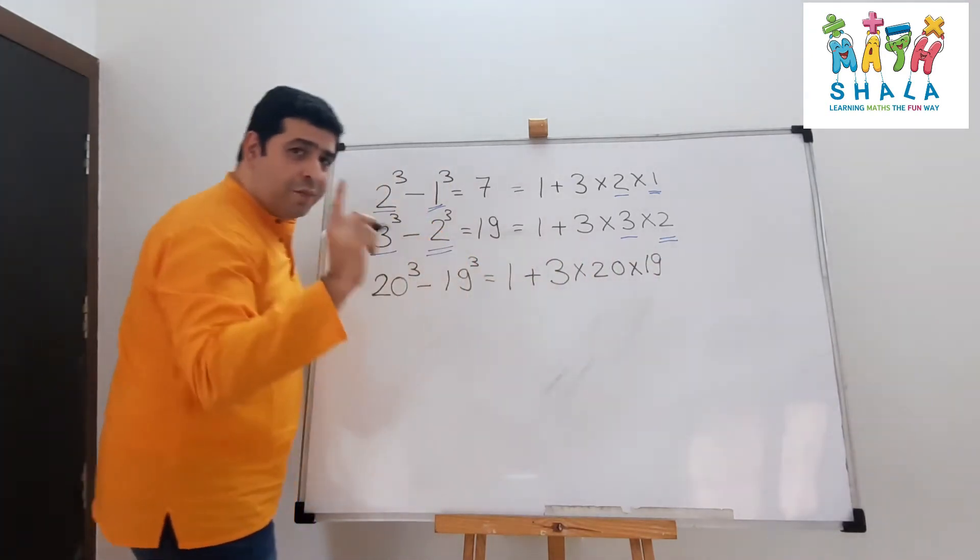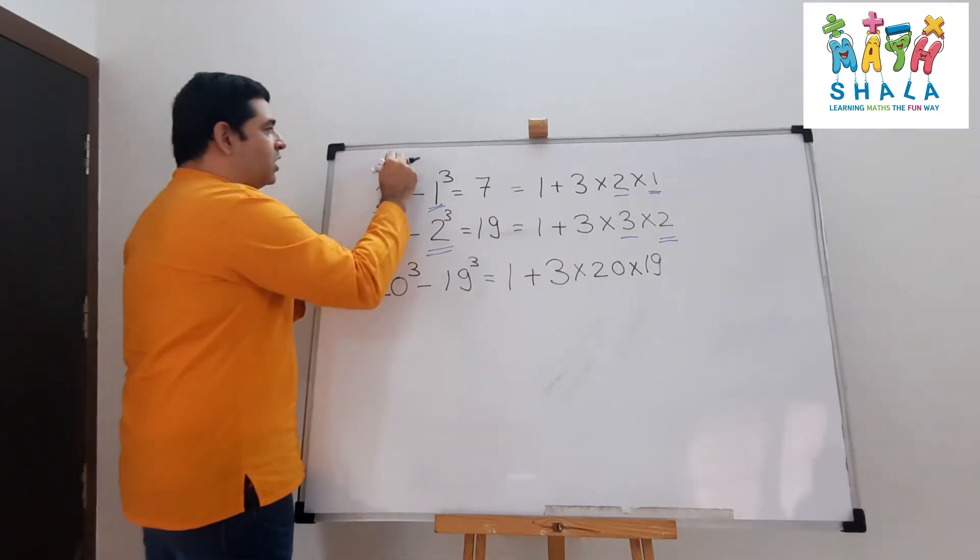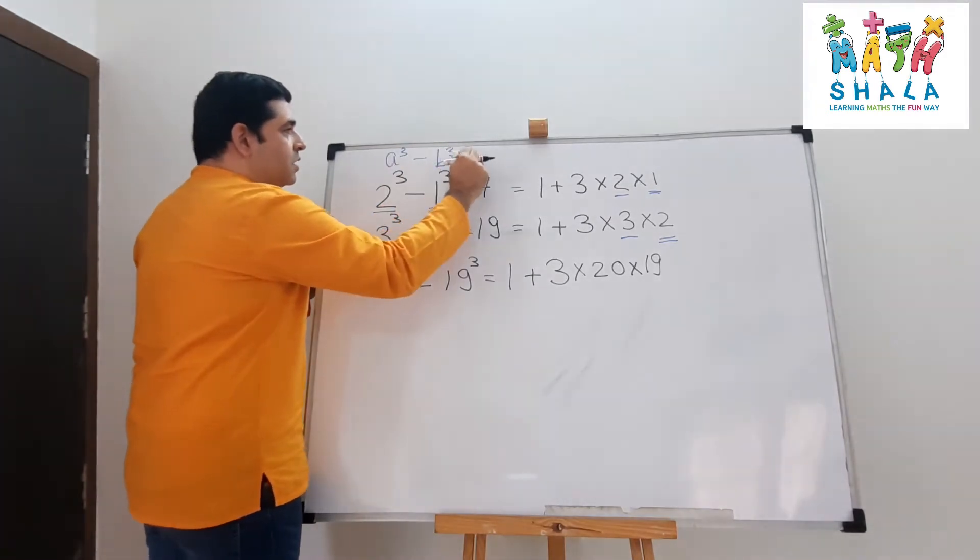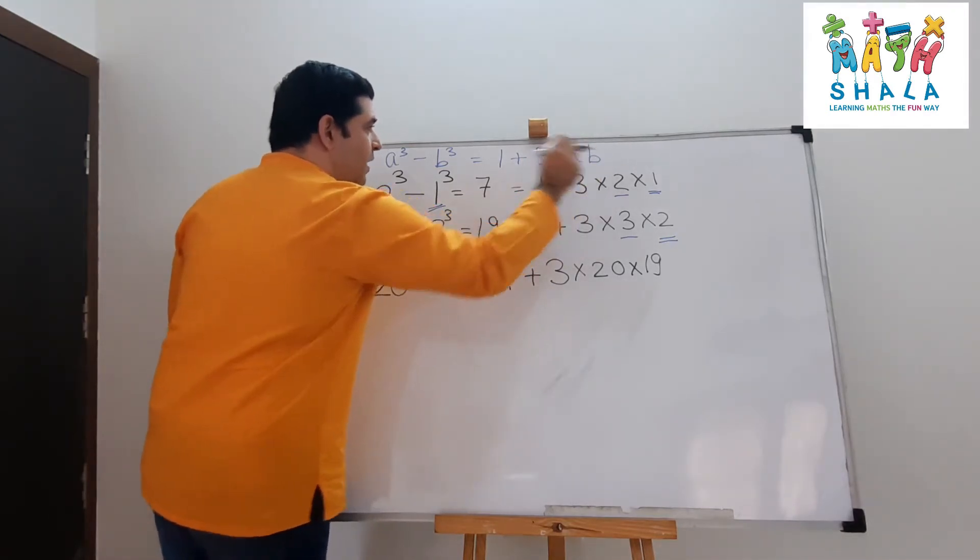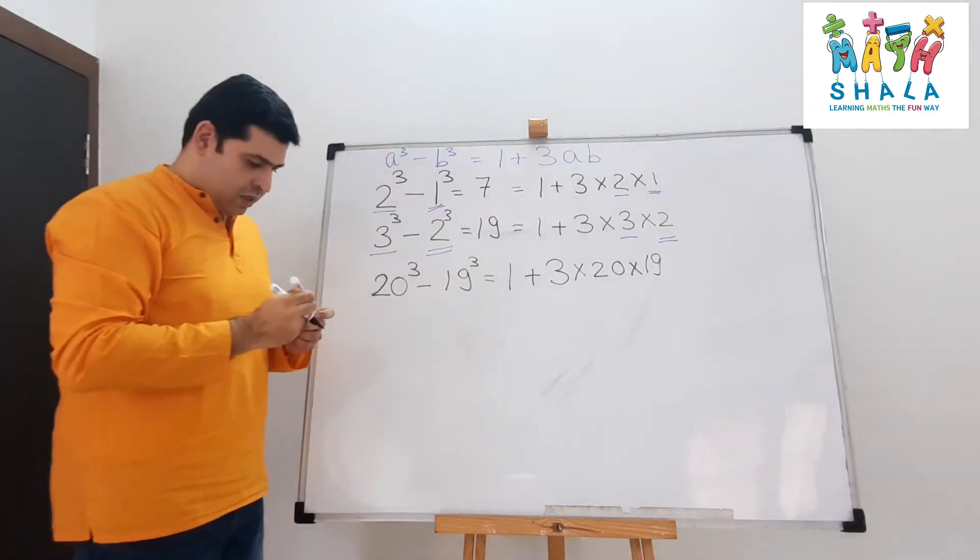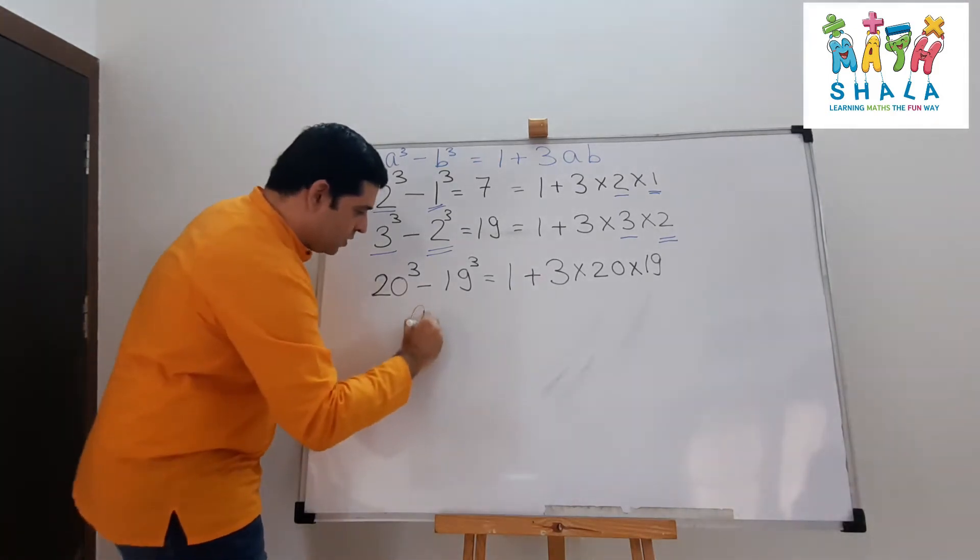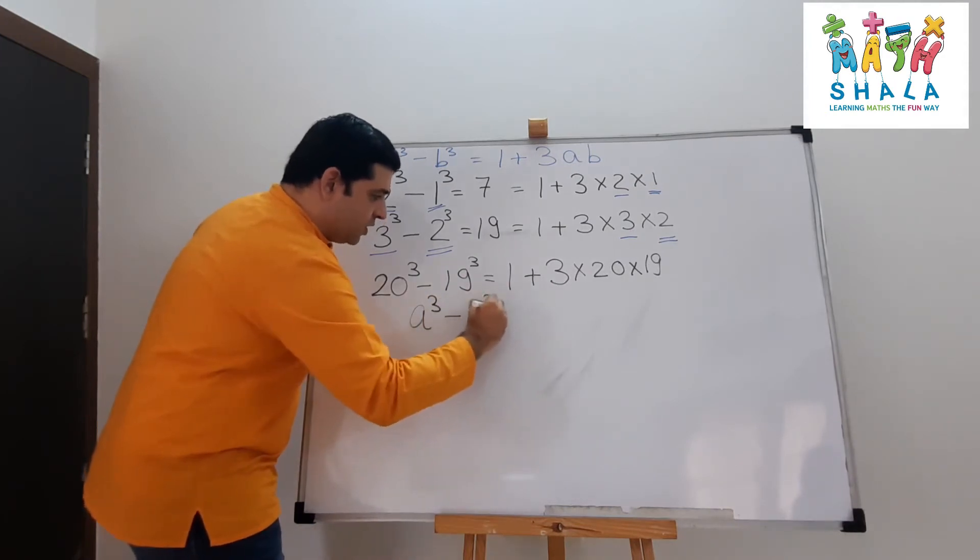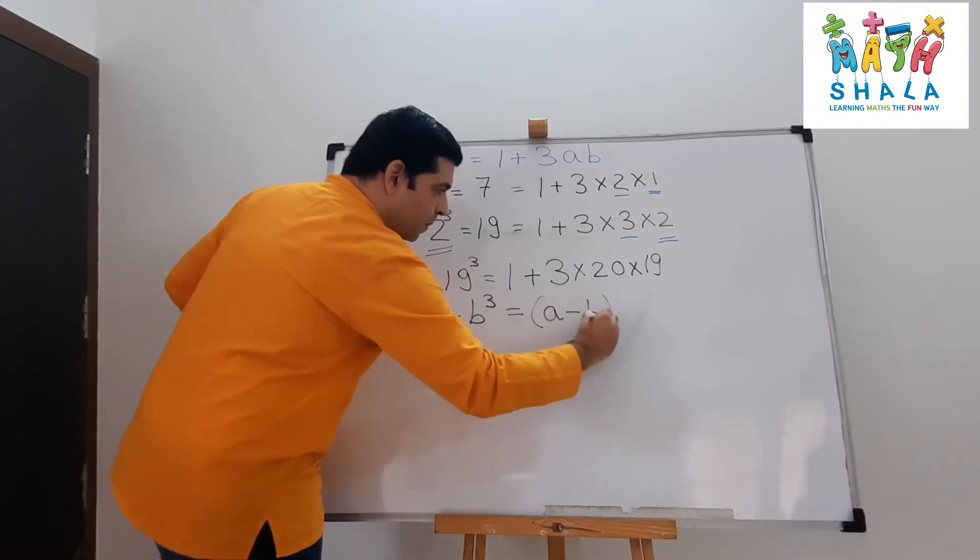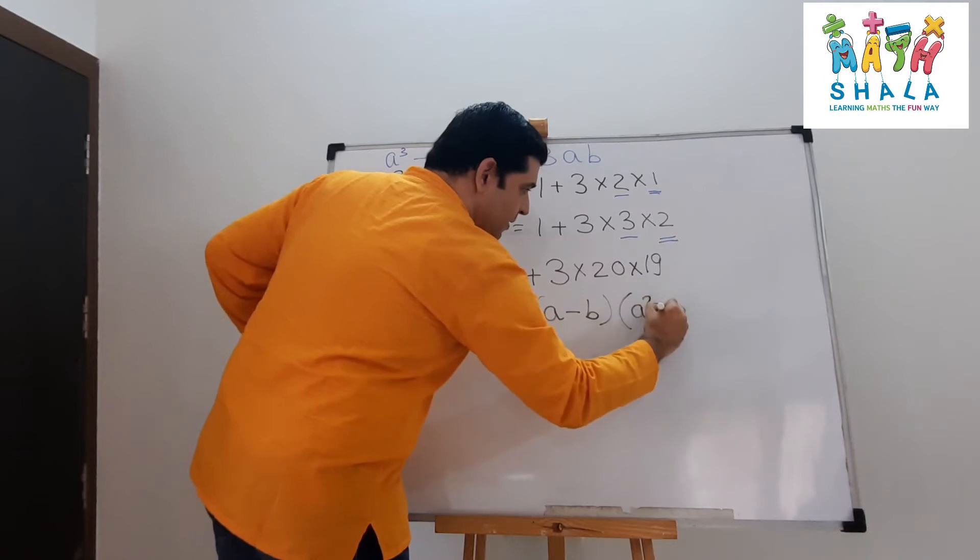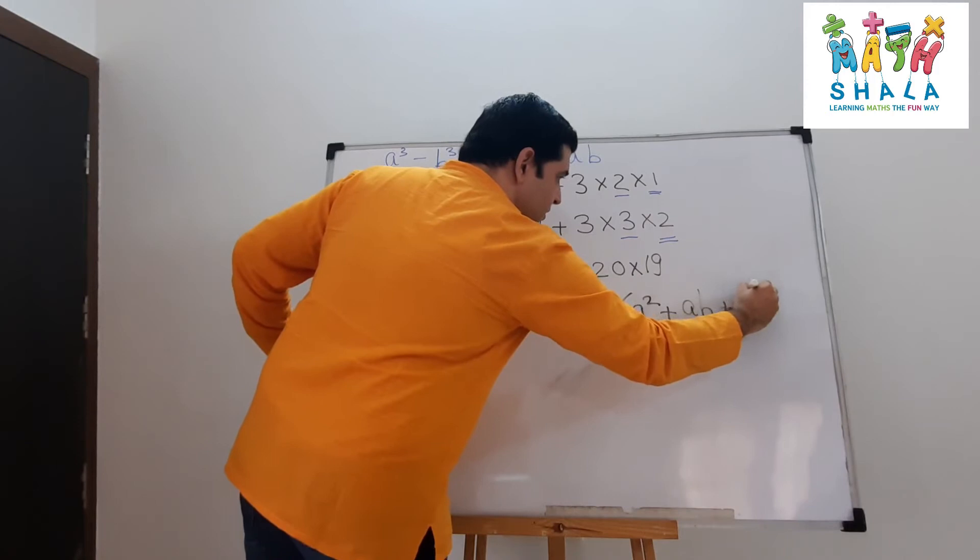But how has this concept come up? a cube minus b cube is 1 plus 3ab. How is it possible? What's the formula of a cube minus b cube? a cube minus b cube equals a minus b into a square plus ab plus b square.